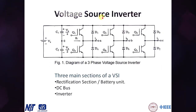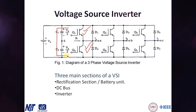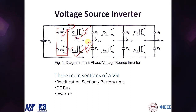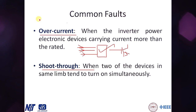Shoot-through happens when two IGBTs in the same limb conduct simultaneously — either both turning on at the same instant, or the lower one beginning conduction while the upper is still conducting. This short-circuits the DC bus, blowing up the capacitor and the IGBTs. This can occur due to a bad microcontroller program or electromagnetic interference, since these devices operate at very high frequency, causing IGBTs to turn on simultaneously because they haven't discharged properly.